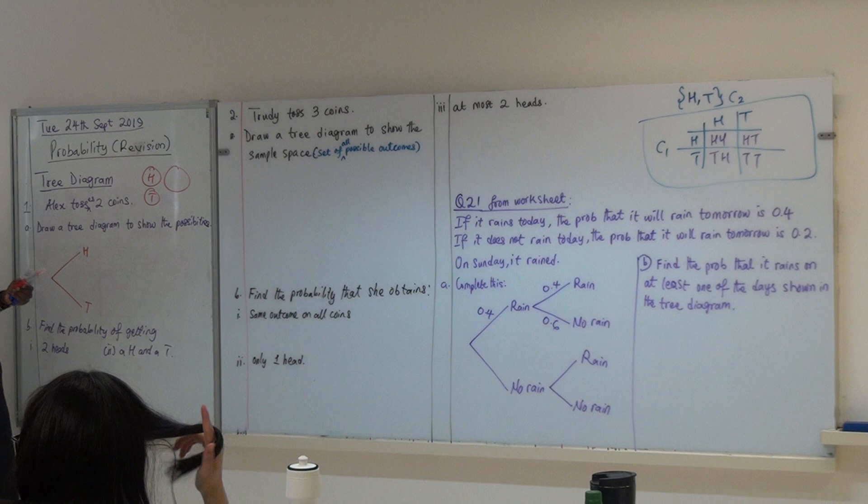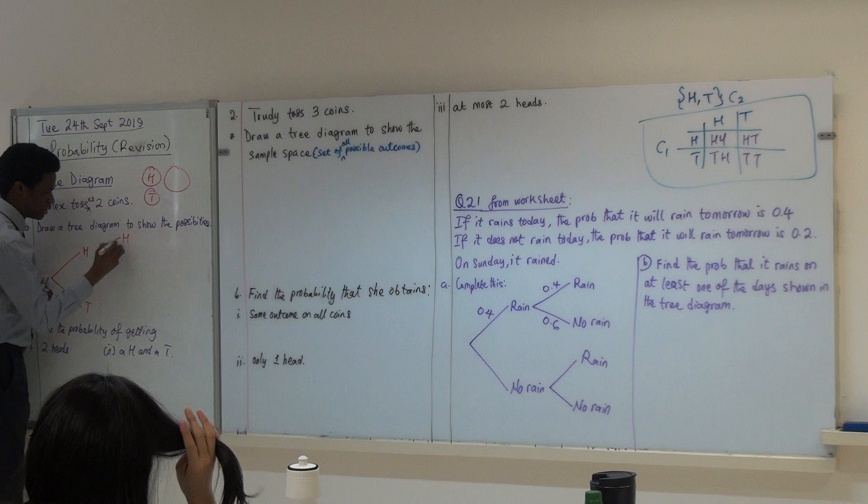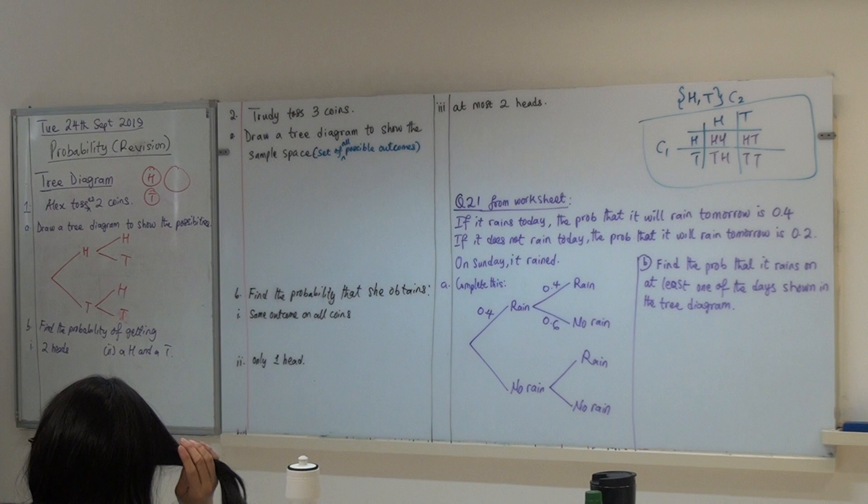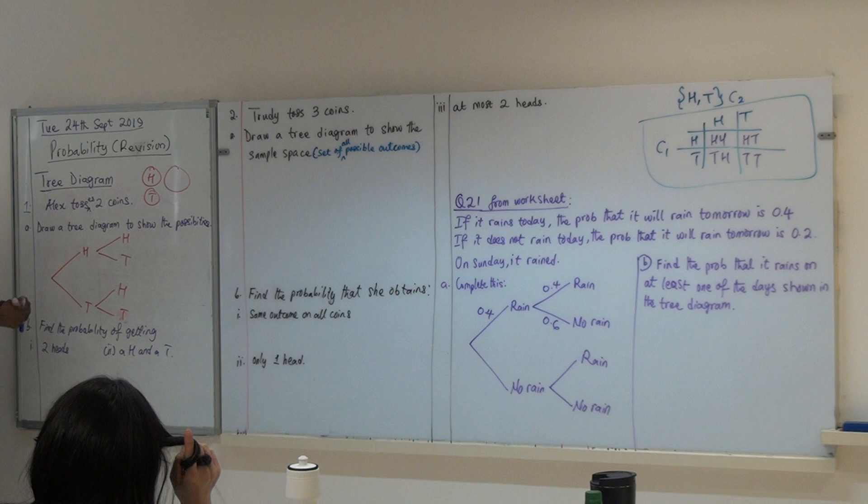So, which means, when the first one is head, the second could either be what? Head or tail as well. So, if the first one is head, the second could be head or tail. Am I making sense? Please listen.